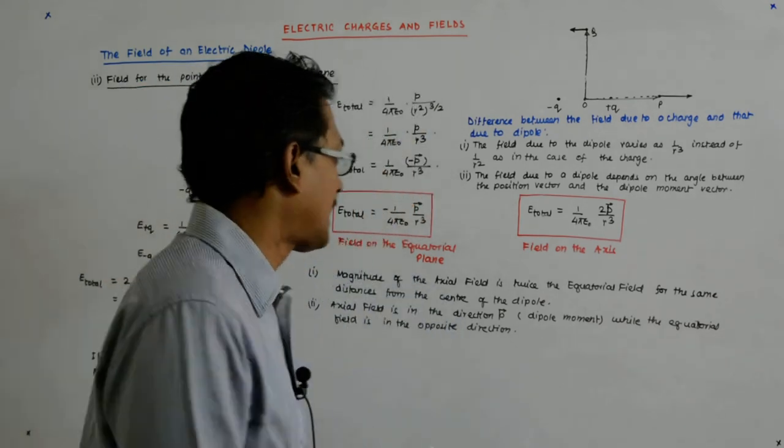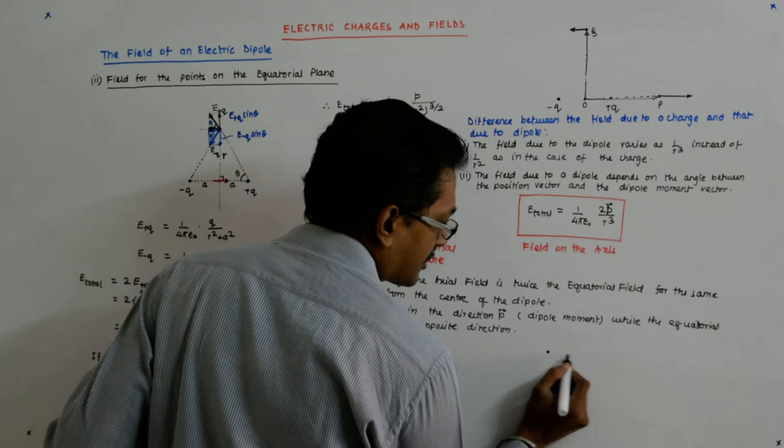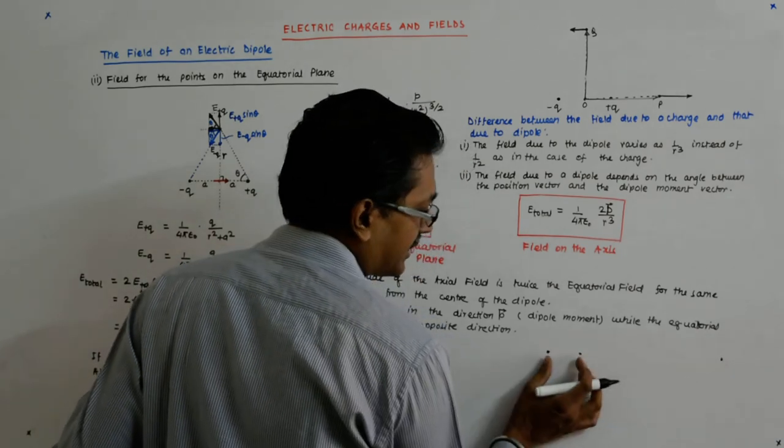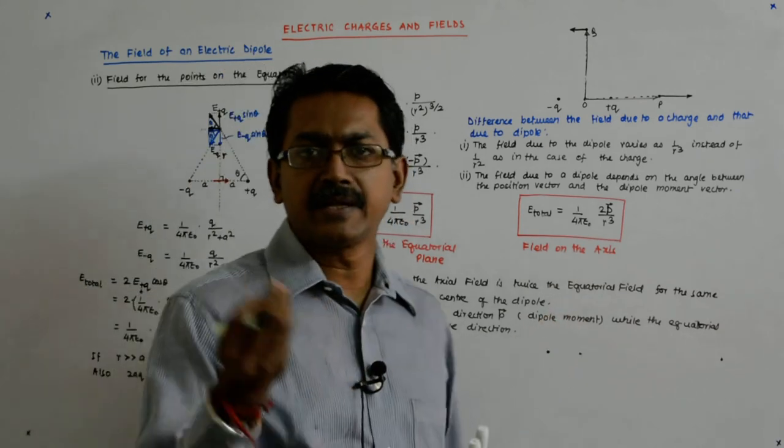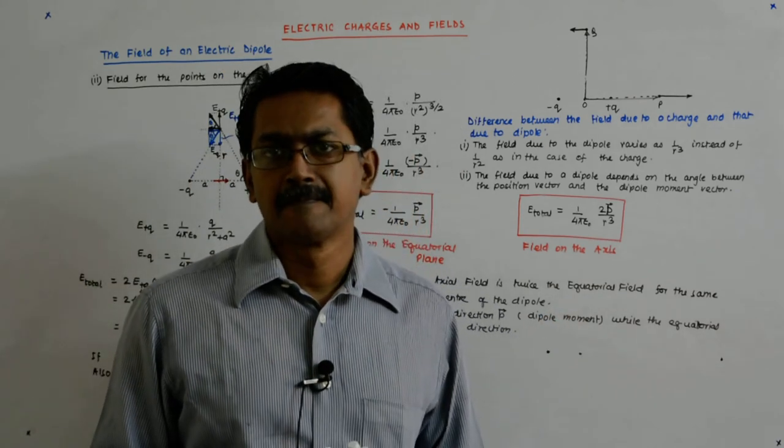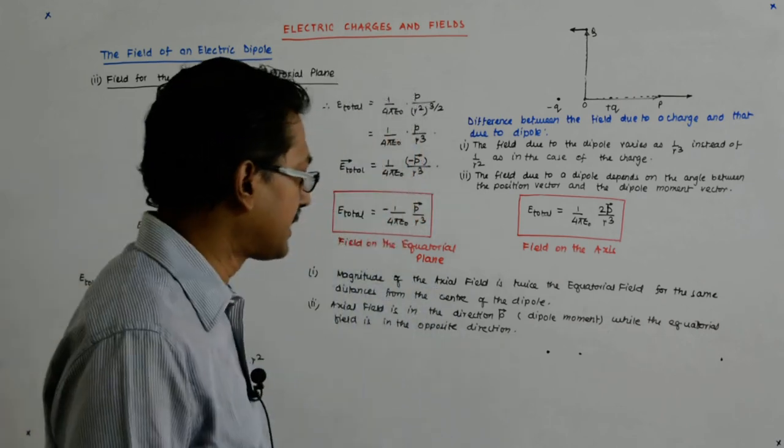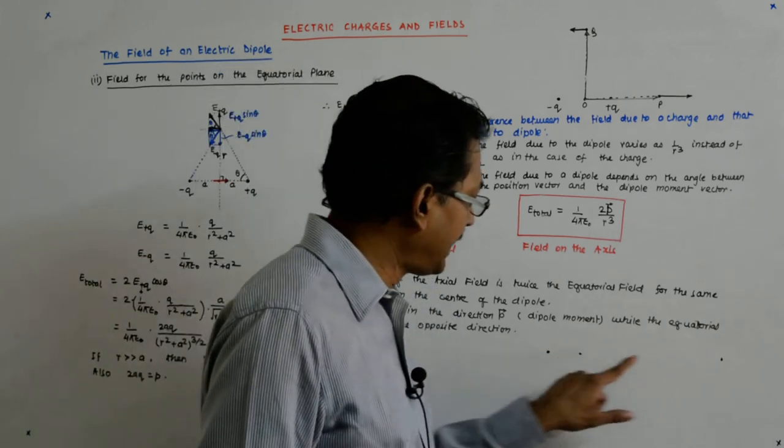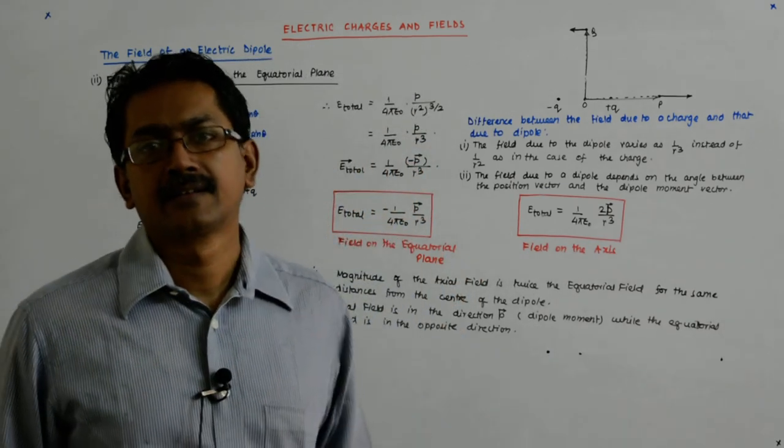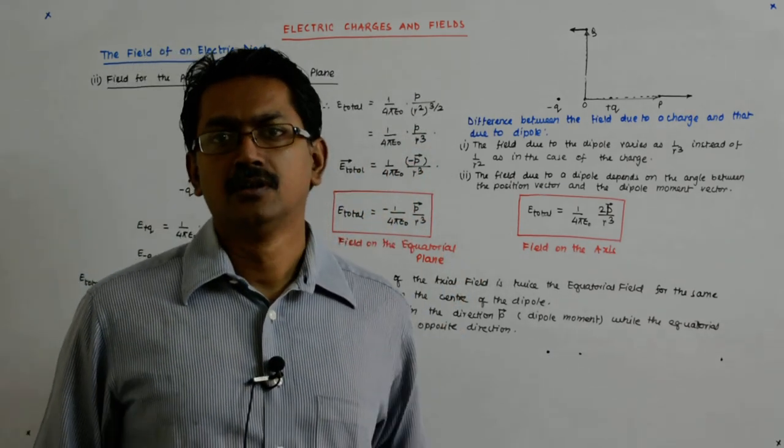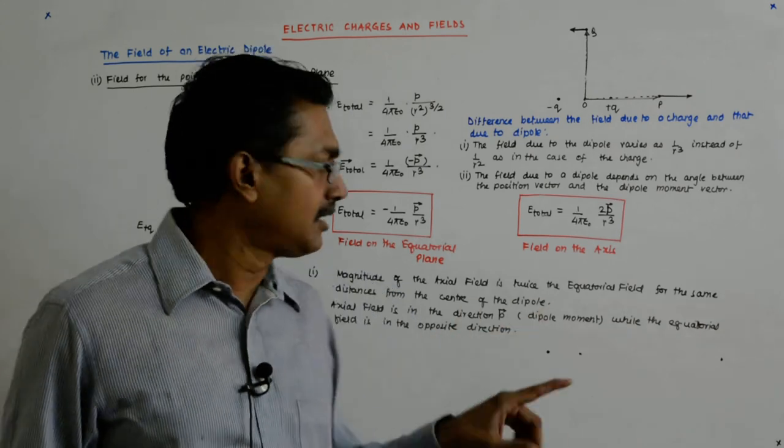And why should it not? Because at larger distances you see the difference in distance between these two points becomes negligibly small. It starts becoming negligibly small. So the field that this creates here and the field that this creates here, they tend to get cancelled by each other.